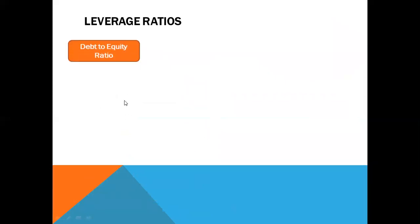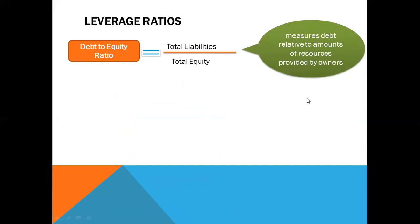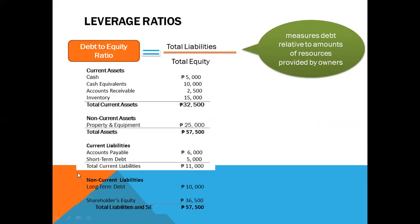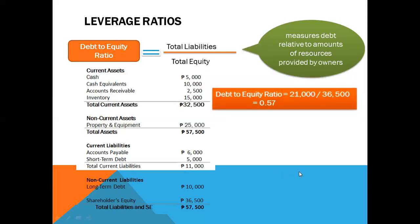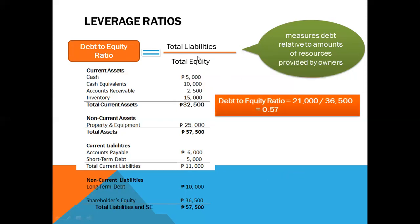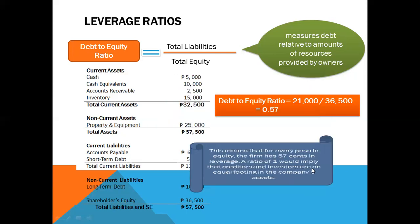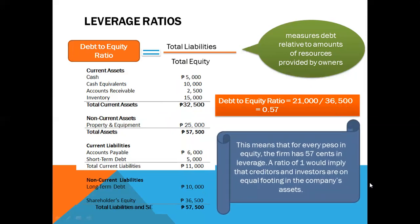Another leverage ratio is the debt-to-equity ratio, which equals total liabilities over total equity. It measures debt relative to resources provided by owners. Using the same balance sheet example: total liabilities of 11,000 plus 10,000 long-term debt equals 21,000, divided by total equity of 36,500, gives a debt-to-equity ratio of 0.57. This means that for every peso in equity, the firm has 57 cents in leverage. A ratio of 1 implies creditors and investors are on equal footing in the company's assets.